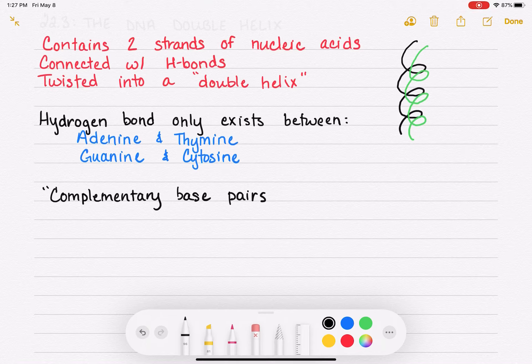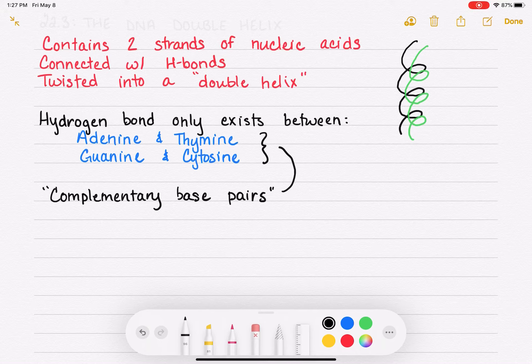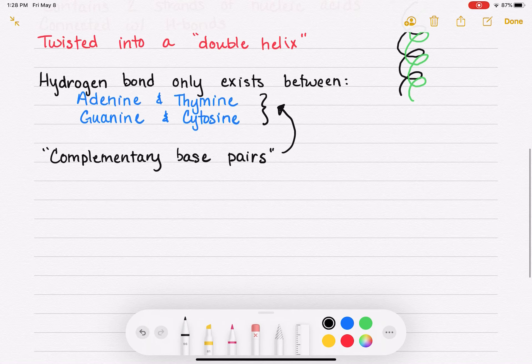And the way that we might use that notation would be to say, what's the complementary base pair to adenine? The answer would be thymine. What's the complementary base pair to guanine? The answer would be cytosine.